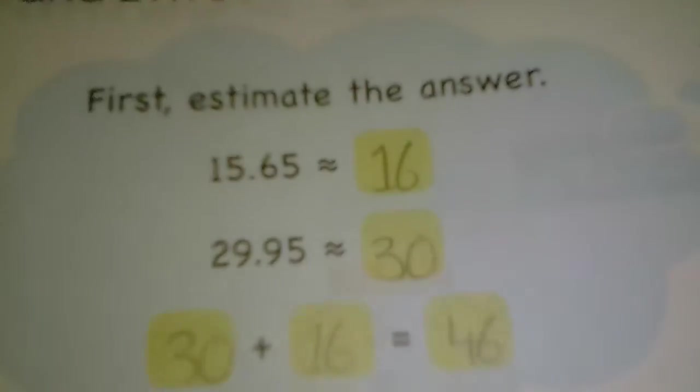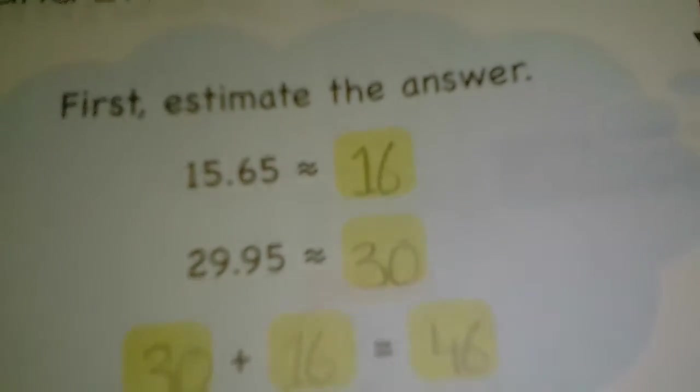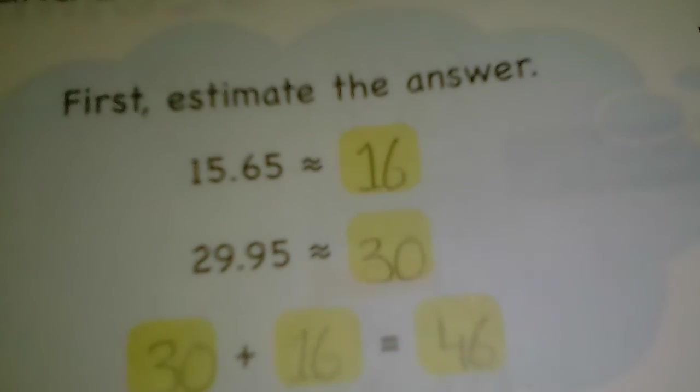First, estimate the answer. You have to round off 15.65 to the whole number and the answer will be 16. Then you have to round off 29.95 to the whole number and the answer will be 30.